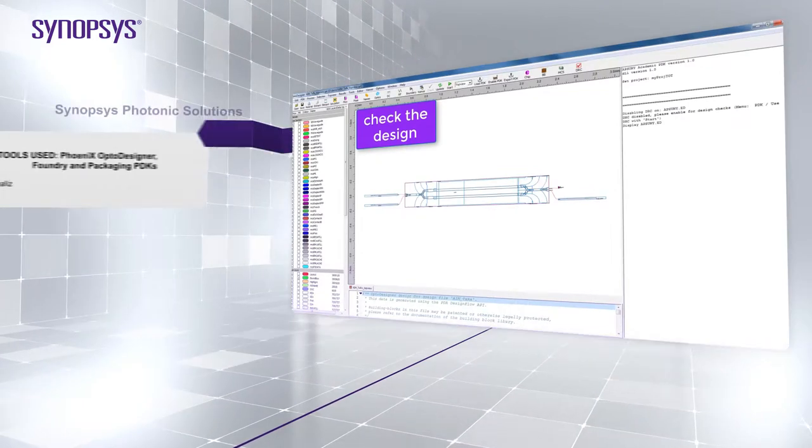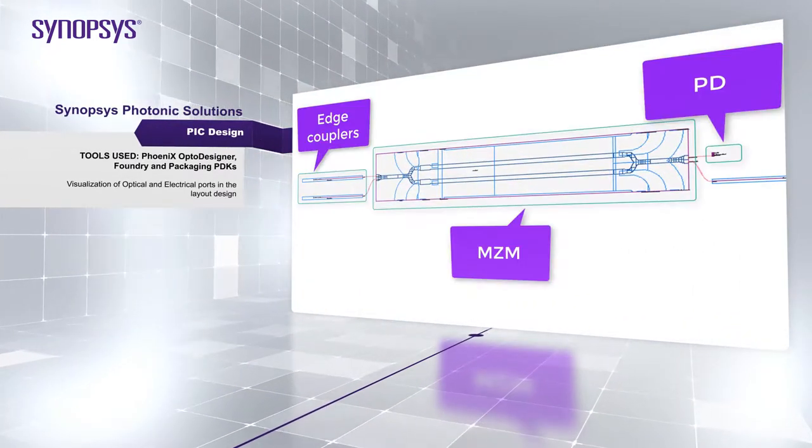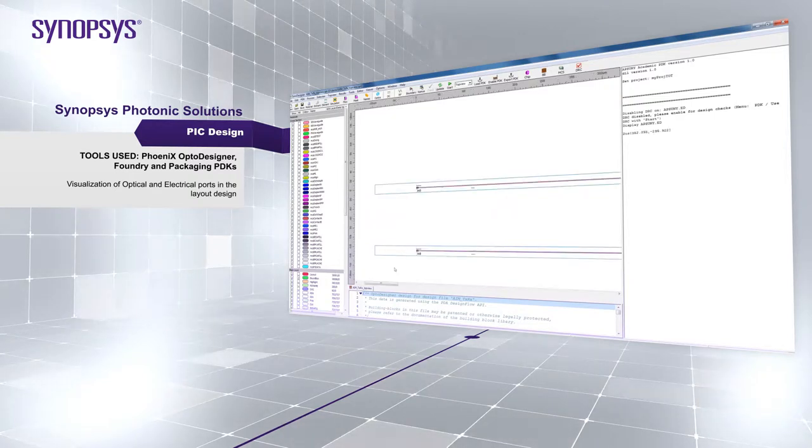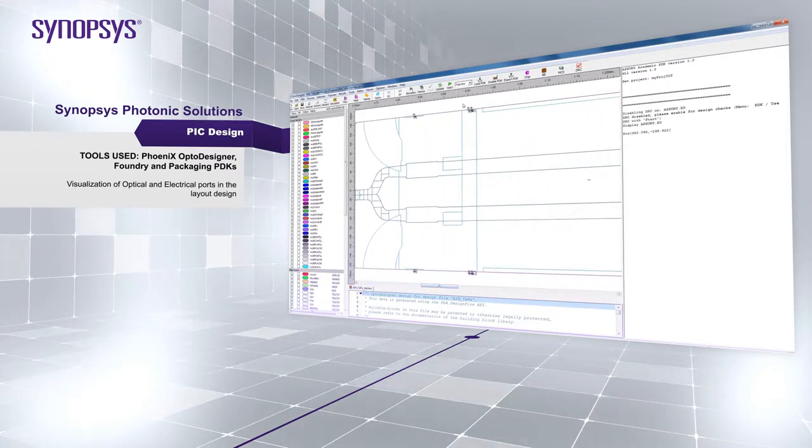Once your design is loaded in OptoDesigner, you can visualize the available optical and electrical ports with the user interface. You can also connect many other elements to complete your layout. The elements can be foundry specific or taken from the element library. There you will find many additional passive components such as phase-aware connectors and delay lines.